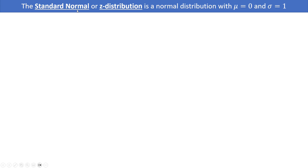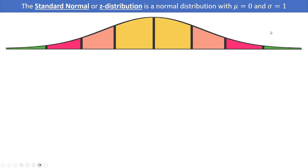The standard normal, or more often called the Z distribution, is just a normal distribution with a mean of zero and a standard deviation of one. Whereas with a typical distribution we might use X to represent our variable, for the standard normal distribution we're going to use Z.